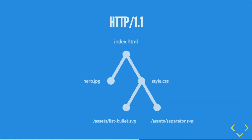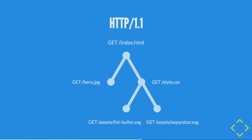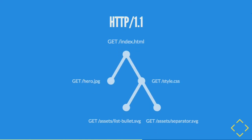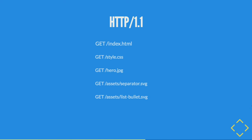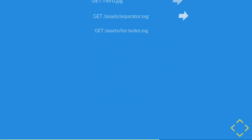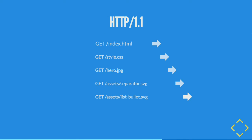In HTTP1, how do we understand this whole graph at once? We have to make requests sequentially. We first get index.html, then download it and notice there's a style.css — let's go get that. Then we get the hero image. Then when we finally receive the CSS, we see we've got to get the separator and the list bullet. That's really slow — requests are sequentially operated, and to download a whole page with maybe hundreds of resources can take a lot of time.